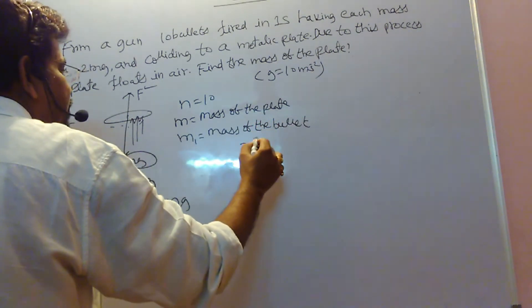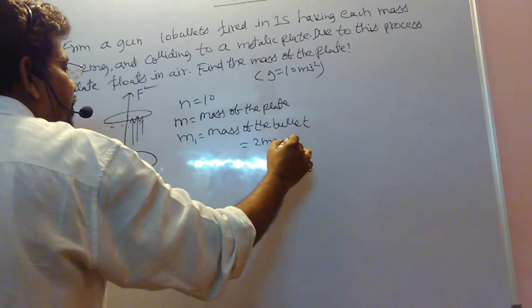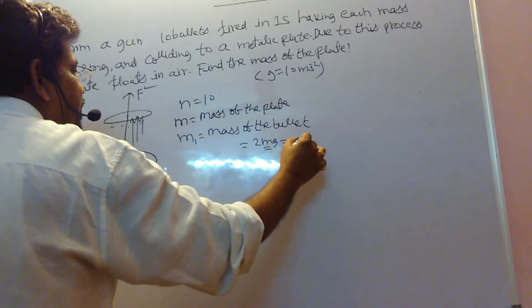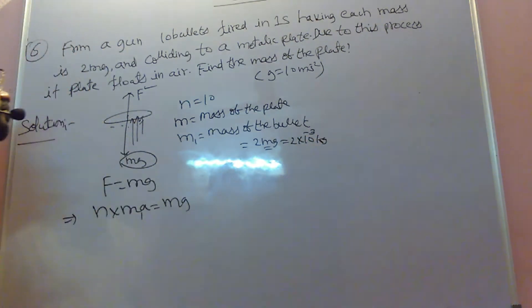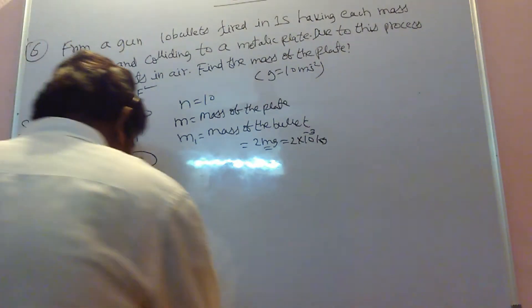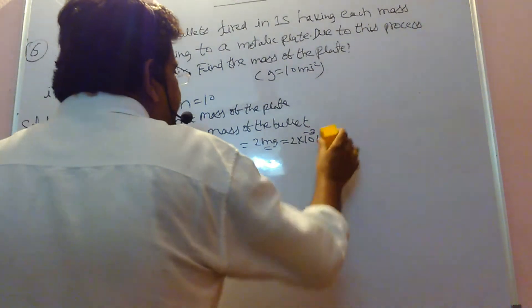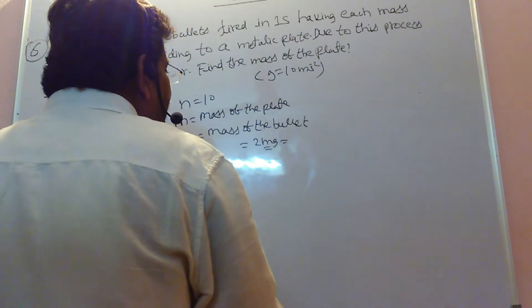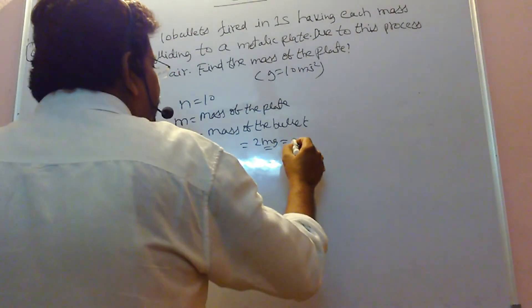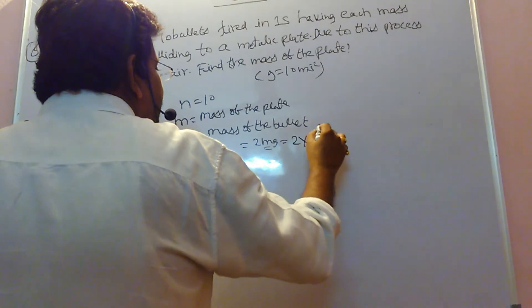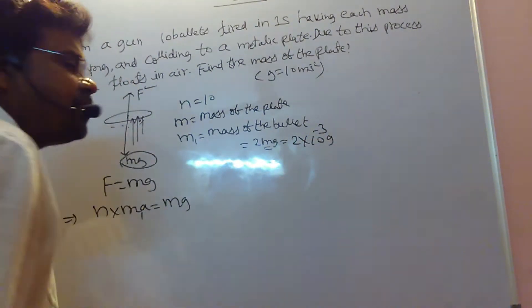What is the mass of the bullet? 2 milligrams. You convert into grams. Milli means 10 power minus 3. One kilogram equals 1000 grams. So 2 milligrams equals 2 times 10 power minus 3 grams. First you convert into grams.